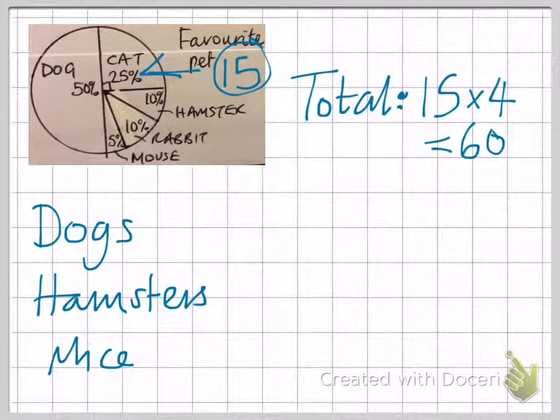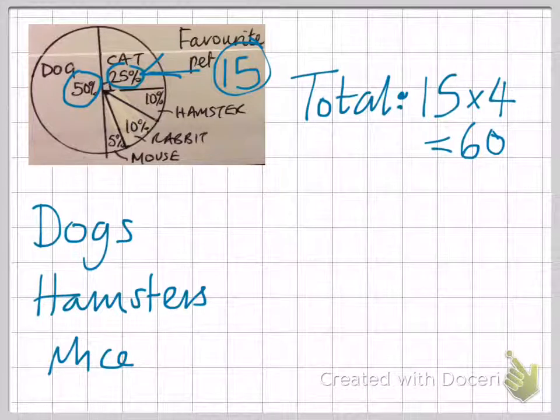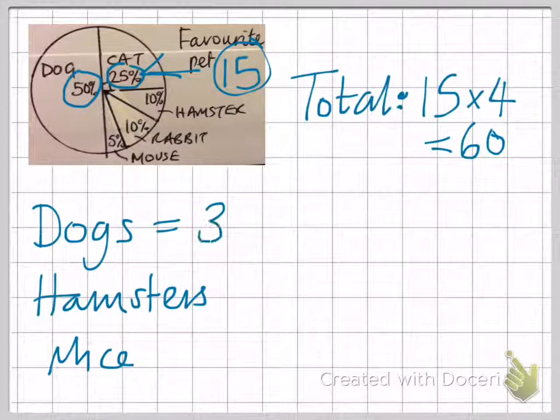Now we could have worked out the dog sector already. We could have just said, okay, 50% is double 25%, so we could have just doubled the 15. Or you could say, now we know that we've got 60 people being interviewed altogether, the dog section would be half, which would give you 30. Either way, you get the same answer.